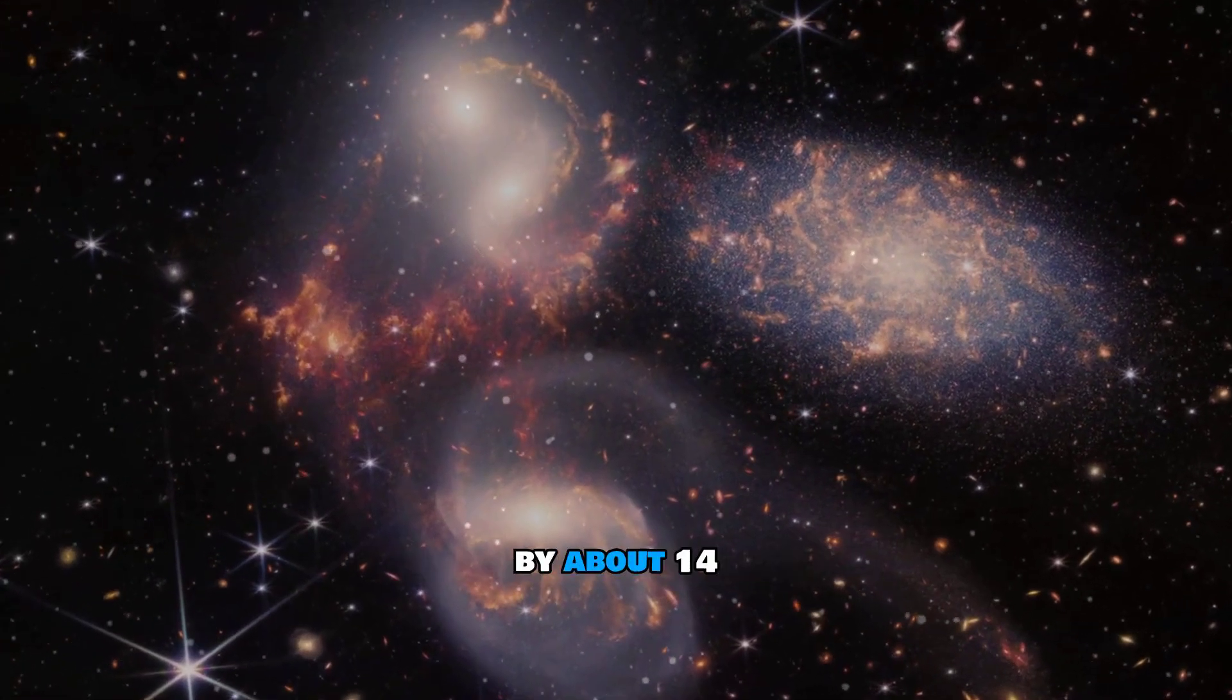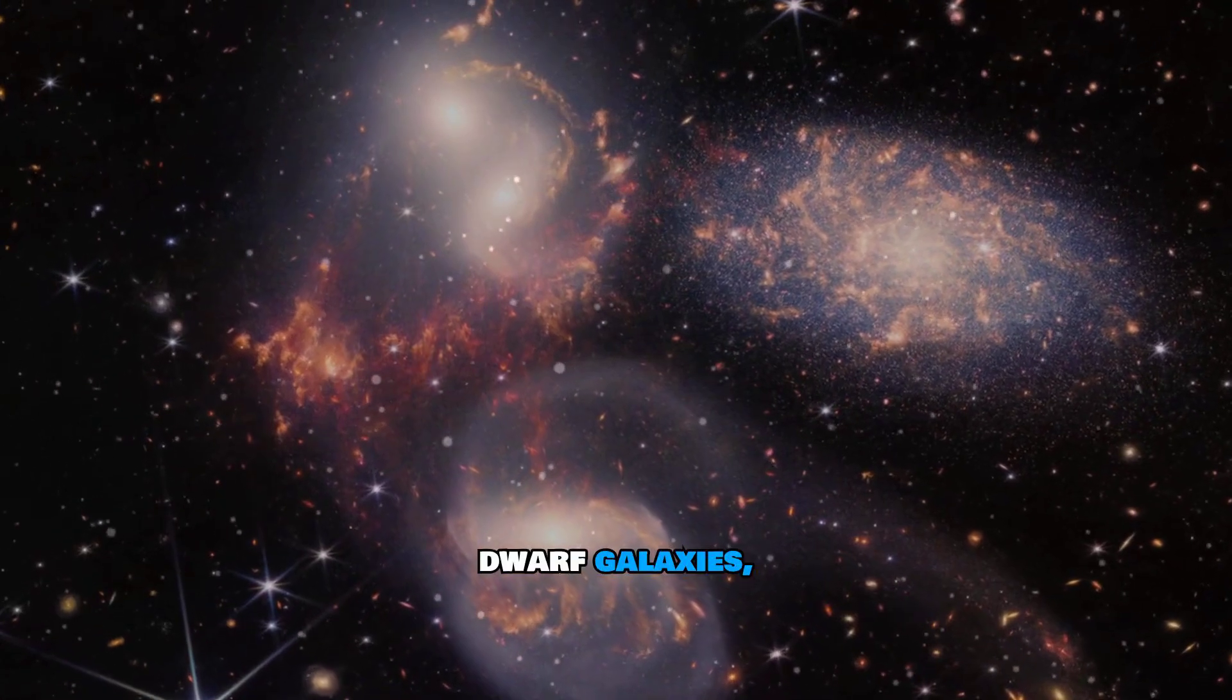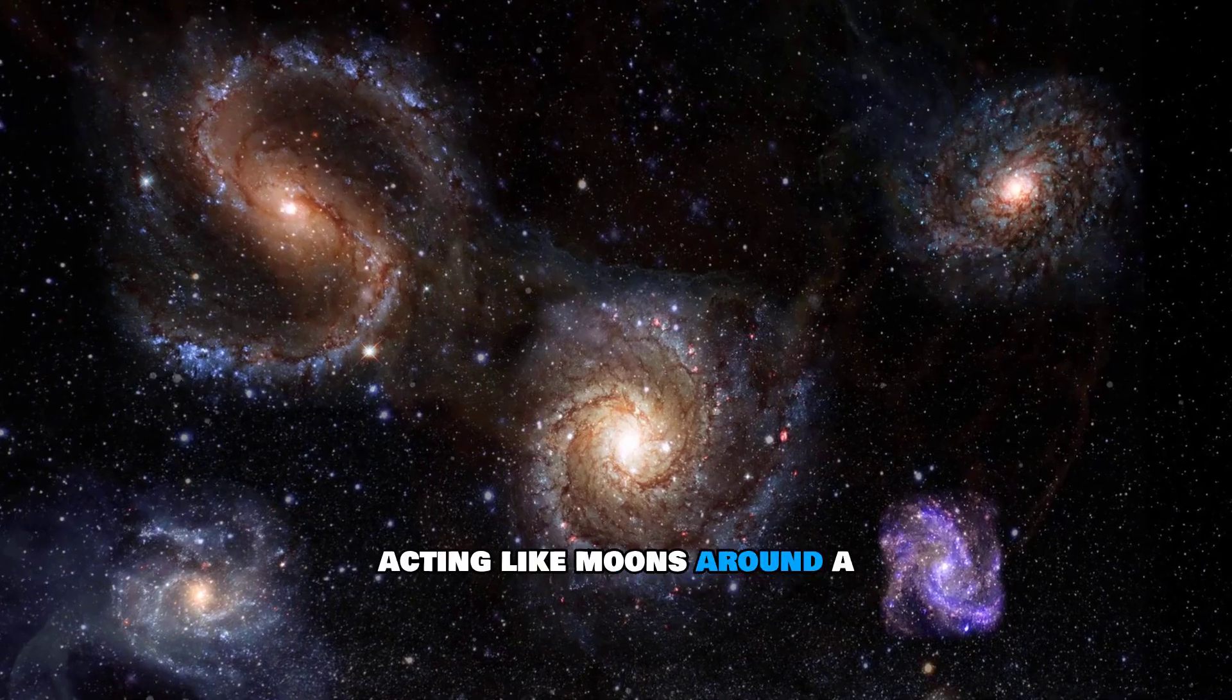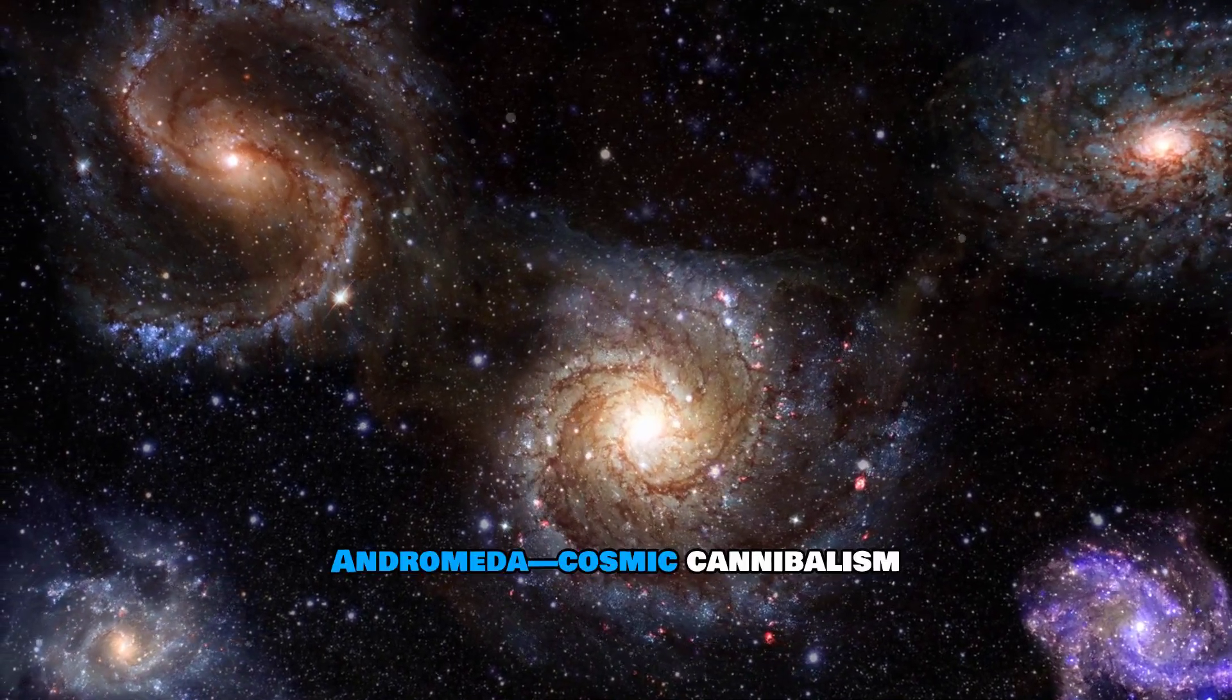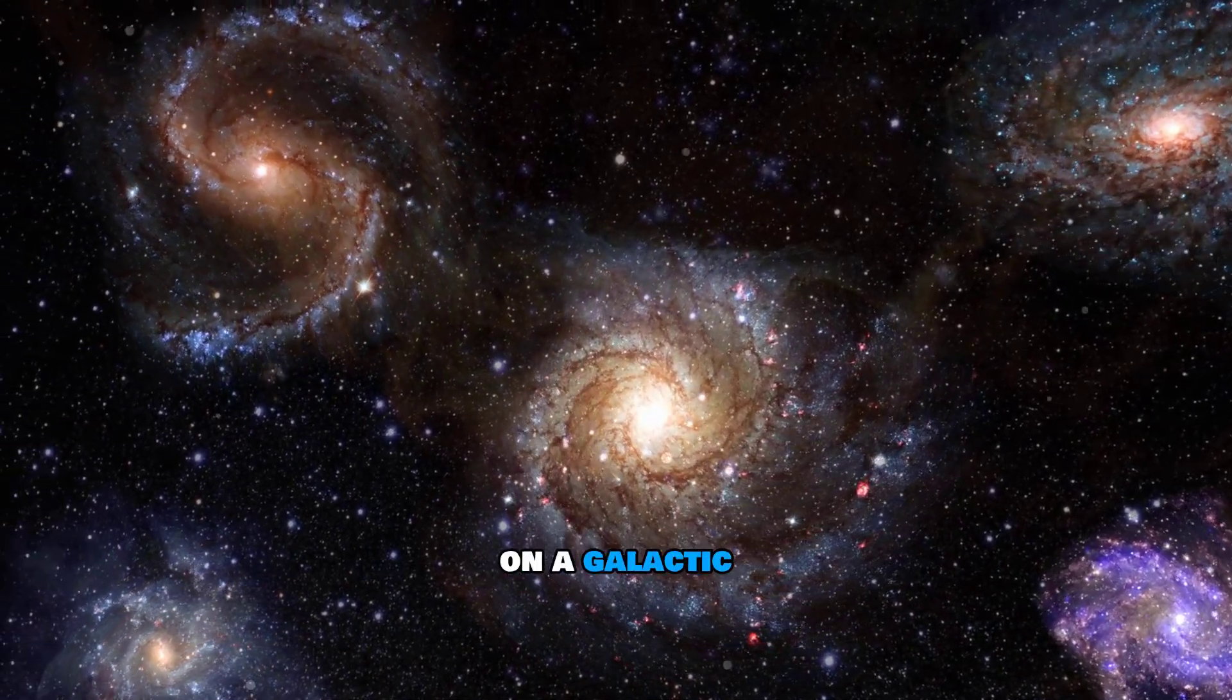Andromeda is surrounded by about 14 dwarf galaxies, acting like moons around a planet. Some of them are even being consumed by Andromeda. Cosmic cannibalism on a galactic scale.